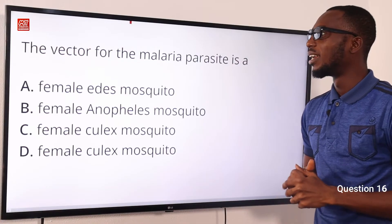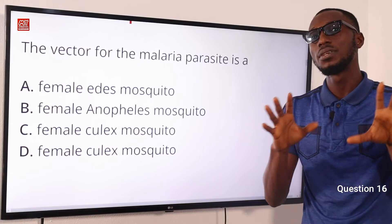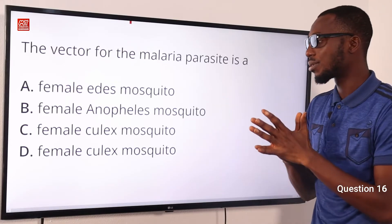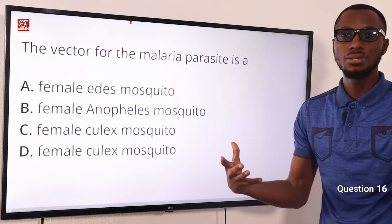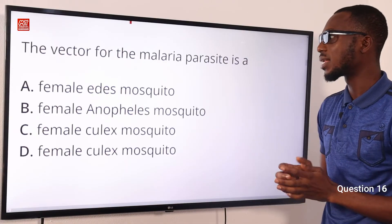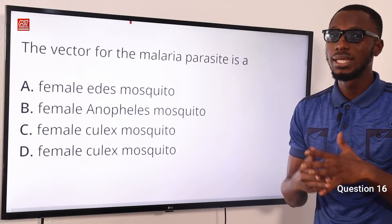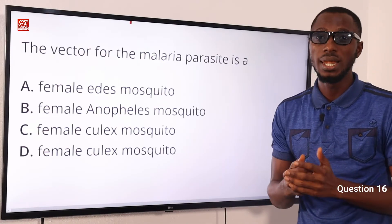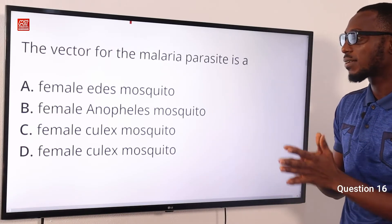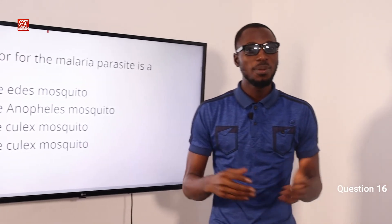Question 16: The vector of the malaria parasite is the female Anopheles mosquito. The male feeds on plant juices. The infected female Anopheles mosquito sucks blood to mature her eggs, and in doing so passes Plasmodium parasites into the body. Types include Plasmodium falciparum (deadly), Plasmodium ovale, Plasmodium vivax, and Plasmodium malariae. The correct option is B: female Anopheles mosquito.